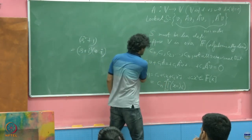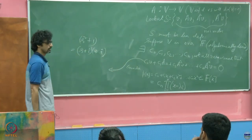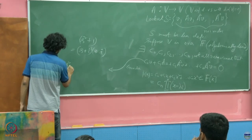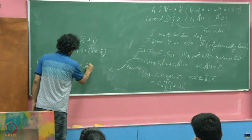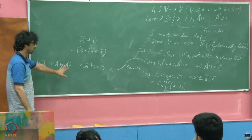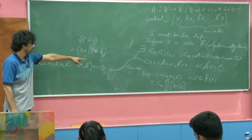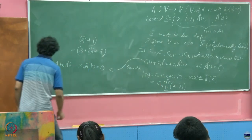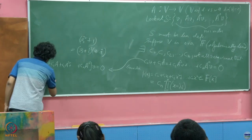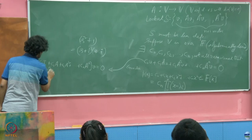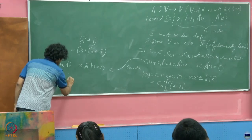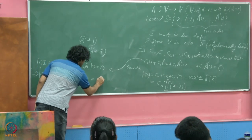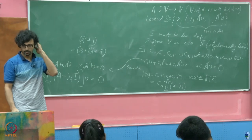If this is true, I can write C₀I + C₁A + C₂A² + ... + CₙA^n acting on V equals 0 — just a rewriting of that same expression. But at this point I make use of the polynomial factorization and write this as Cₙ times the product, for i from 1 through n, of (A − λᵢI), this whole object acting on V equals 0.